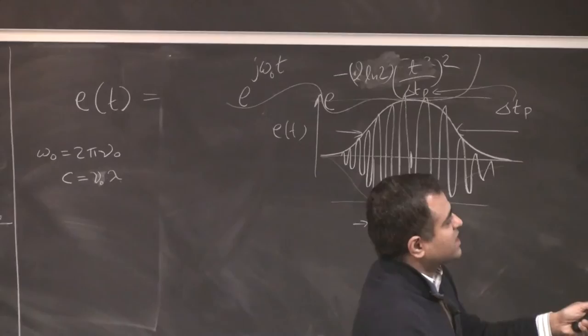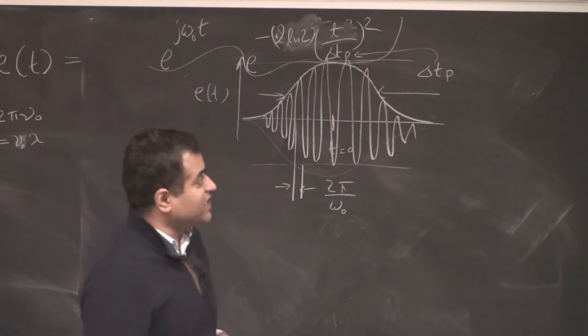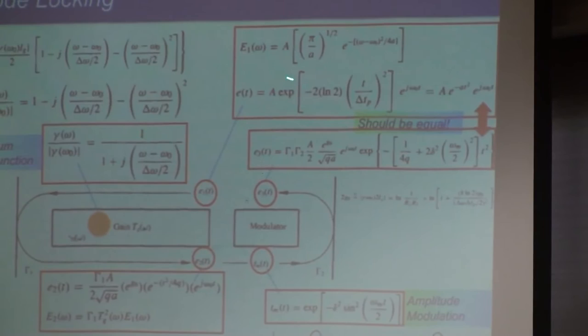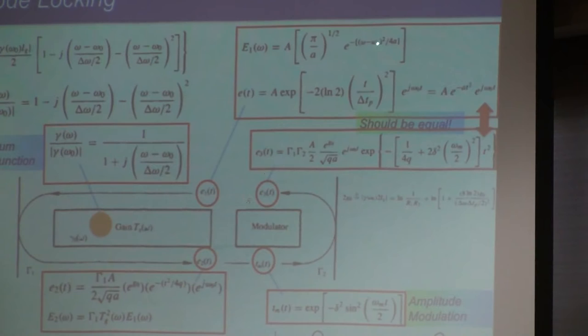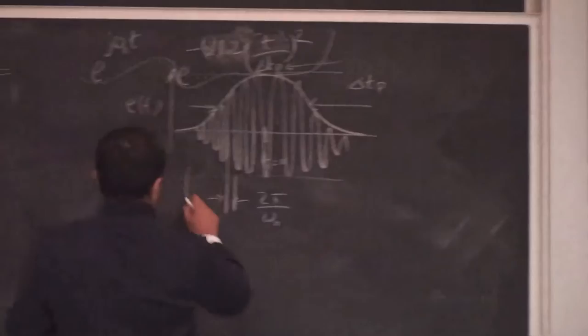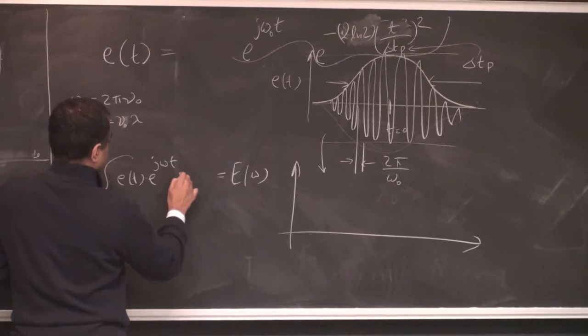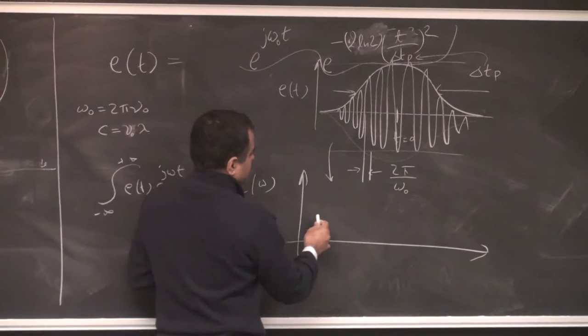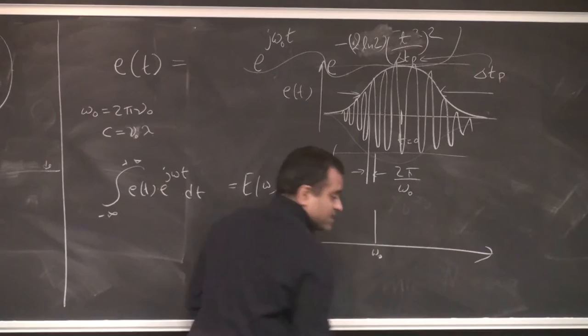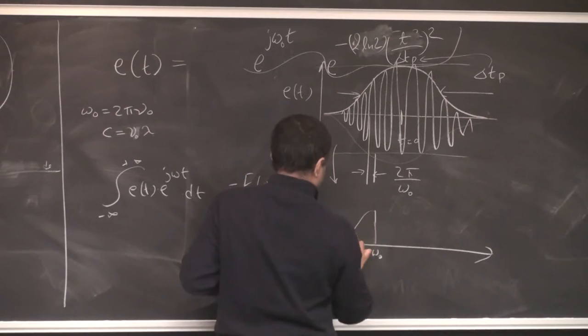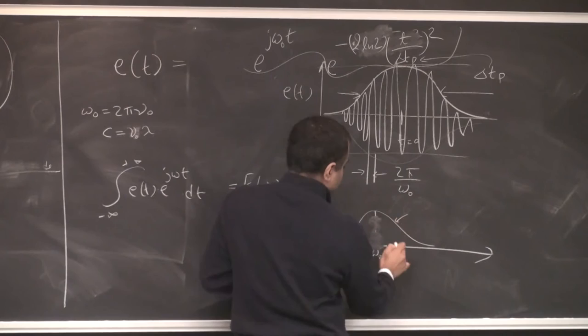Taking the Fourier transform of this Gaussian pulse, the nice property is that the Fourier transform of a Gaussian is also a Gaussian — centered around the center frequency ω₀, going as e^(−(ω−ω₀)²/4A). Physically, in the frequency domain E(ω) is a Gaussian spread centered at ω₀. The fast frequency determines the center, and the spread of the Gaussian determines the bandwidth.